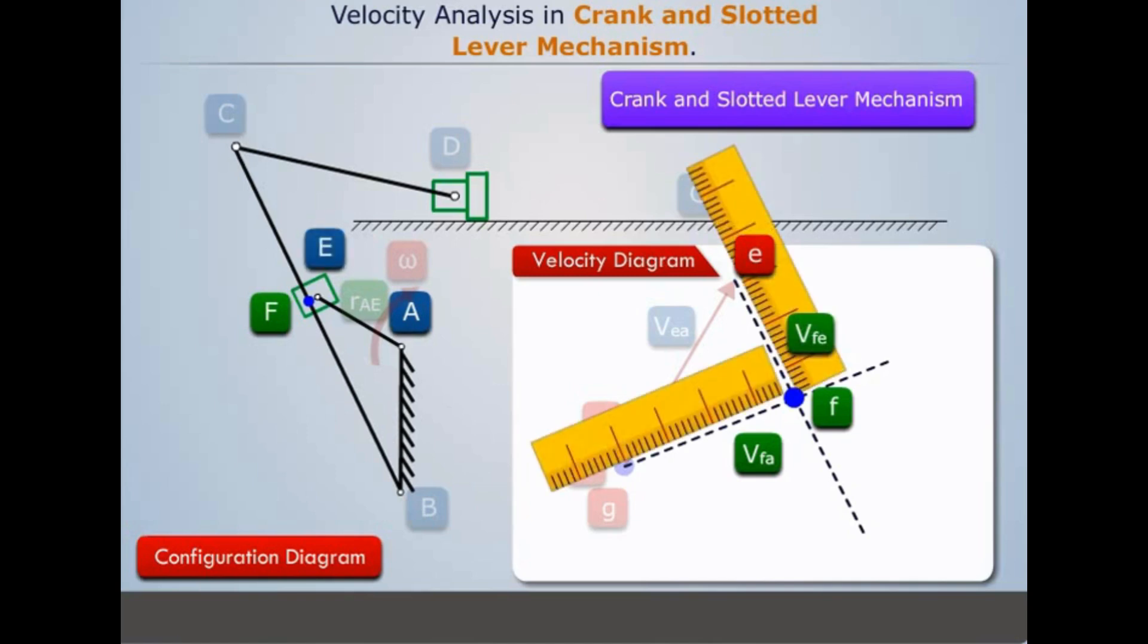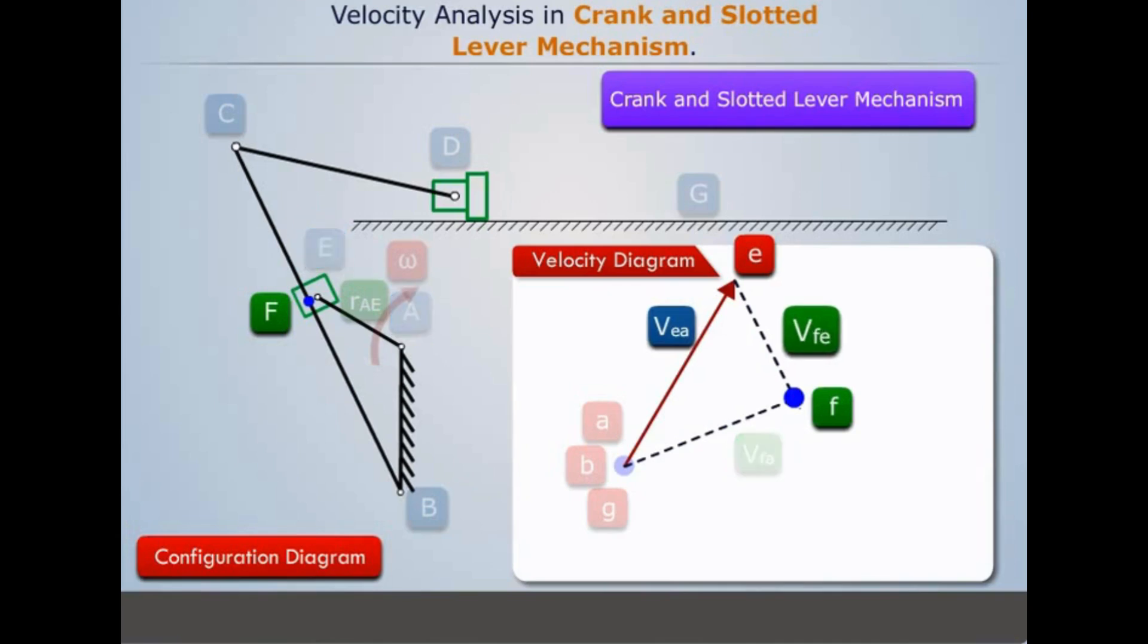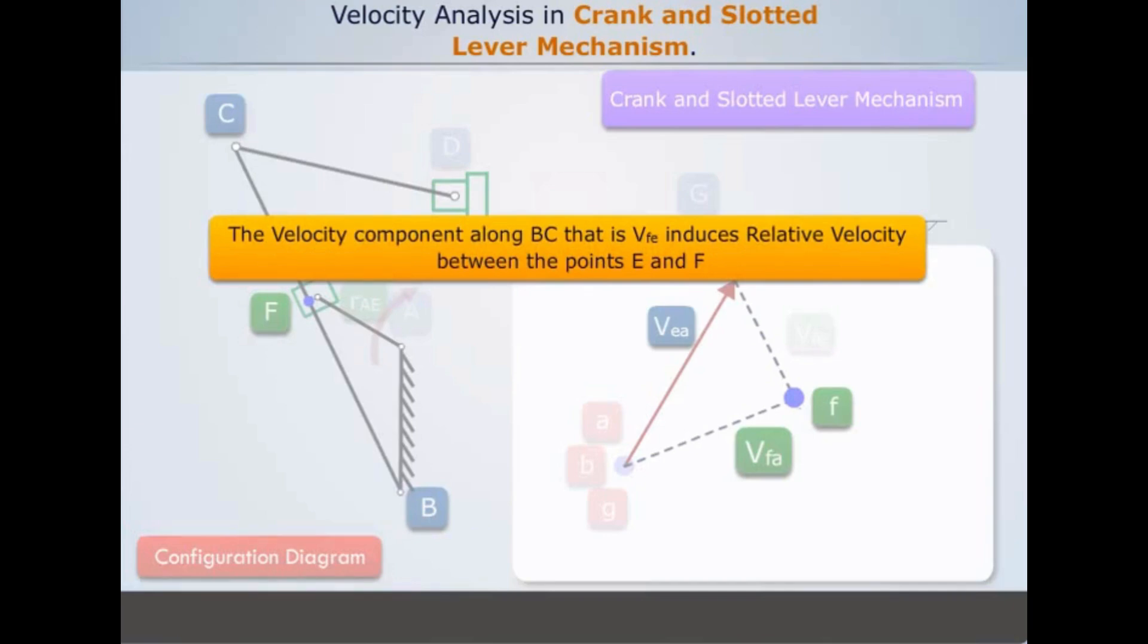We measure the two lines in the velocity diagram and descale them. We see that velocity vector VFA and VFE are perpendicular to each other. So it can be assumed that velocity vector VEA has two components, one parallel and the other perpendicular to link BC. The velocity component along BC, that is VFE, induces relative velocity between the points E and F.